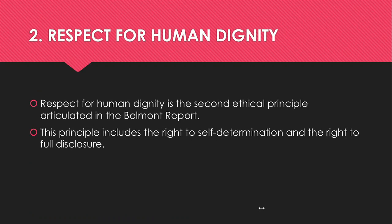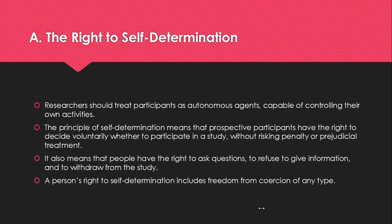Respect for human dignity is the second ethical principle articulated in the Belmont Report. This principle includes the right to self-determination and the right to full disclosure. Researchers should treat participants as autonomous agents capable of controlling their own activities. The principle of self-determination means that prospective participants have the right to decide voluntarily whether to participate in a study without risking penalty or prejudicial treatment. It also means people have the right to ask questions, refuse to give information, and withdraw from the study.